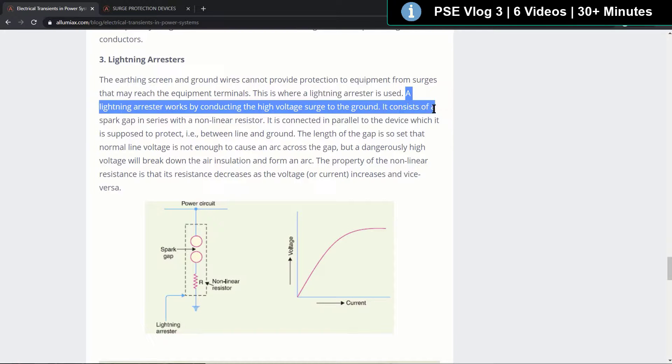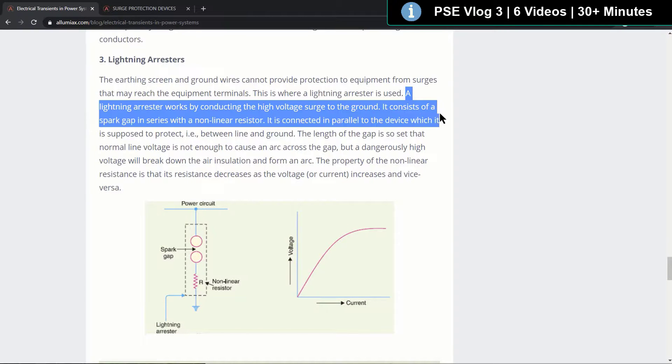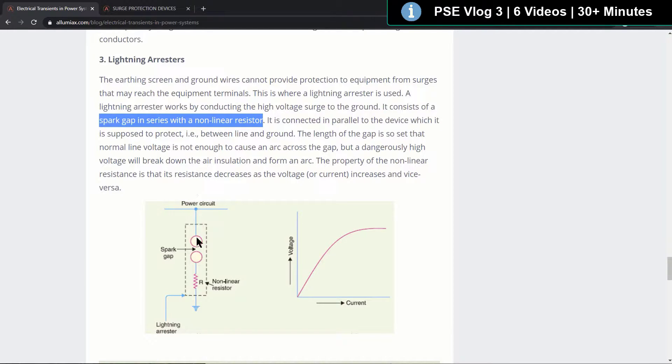A lightning arrester works by conducting a high voltage surge to the ground in terms of a spark gap in series with a non-linear resistor.